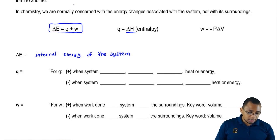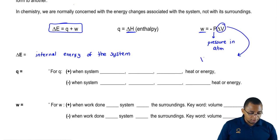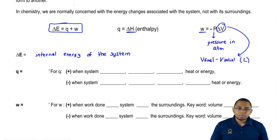W equals negative pressure times the change in volume. Pressure here will be in atmospheres. And this delta V means change in volume, so that means final volume minus initial volume. The volume here is usually in liters.